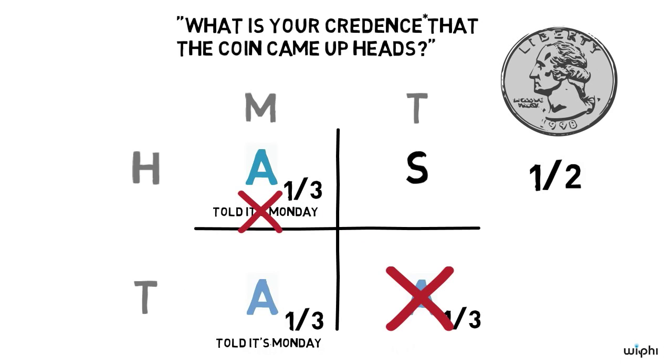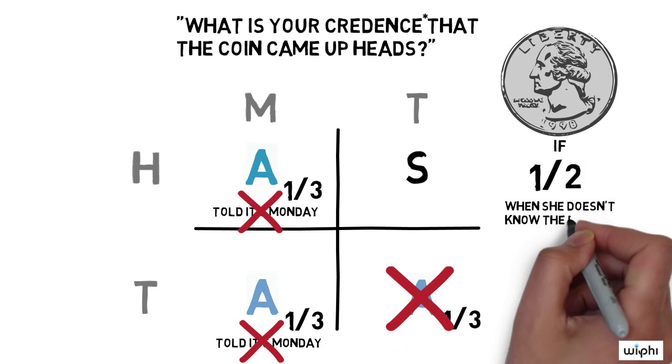But if you think that sleeping beauty should say one half when she doesn't know what day it is, I can prove to you using some very simple assumptions about how probabilities work that sleeping beauty ought to say when she's told it's Monday that the coin has a two thirds chance of coming up heads.